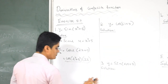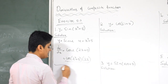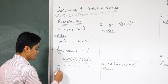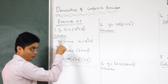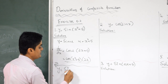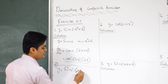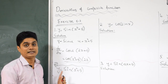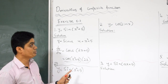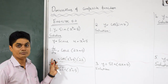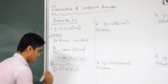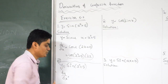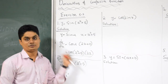Now I will show you how to write this answer directly without writing U and V. You can directly write the answer. Observe this carefully — this is the same problem. Y equals sin of X squared plus 5. You can write this answer in one step and you must practice that because you may not get time to write all this in an exam. DY by DX is equal to — I will tell you the logic used in this procedure.